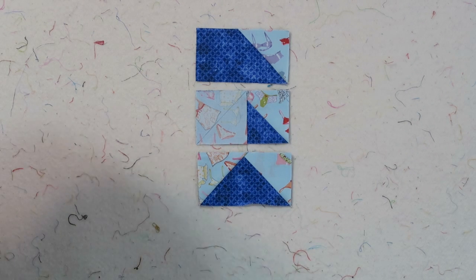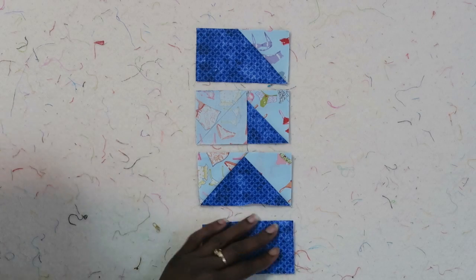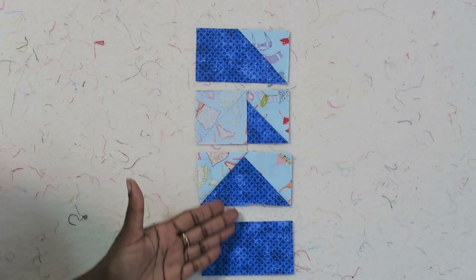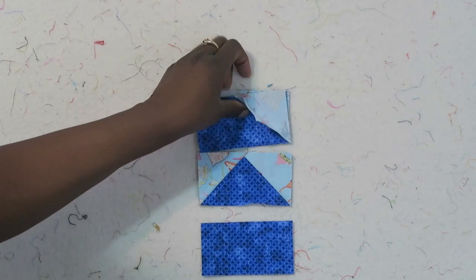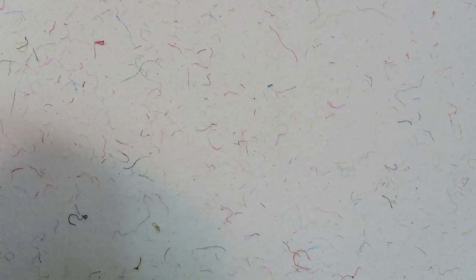And then my other pieces I just have up here for samples. When you're done, you'll have four of the same flying geese units. Now if you're doing something else, you can make a flying geese border with these. You can switch these around, but for my project I want all of my flying geese units to be matching in sets of four.